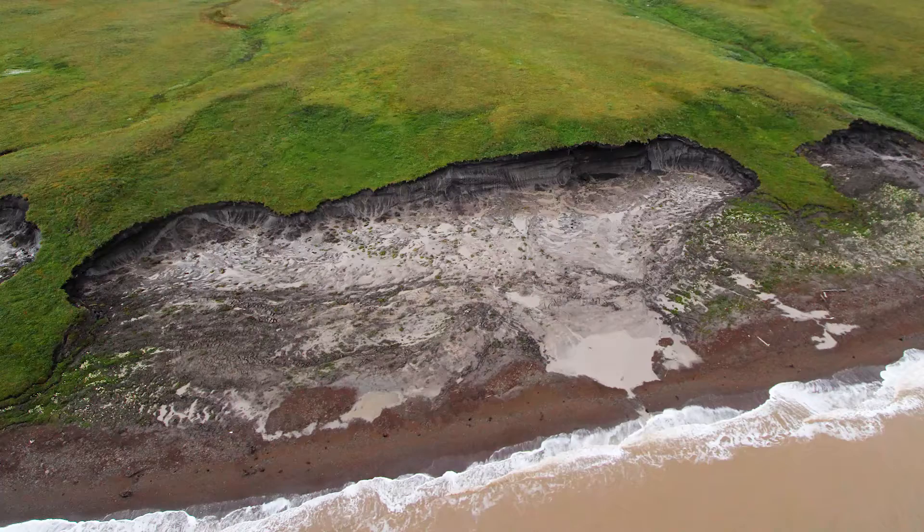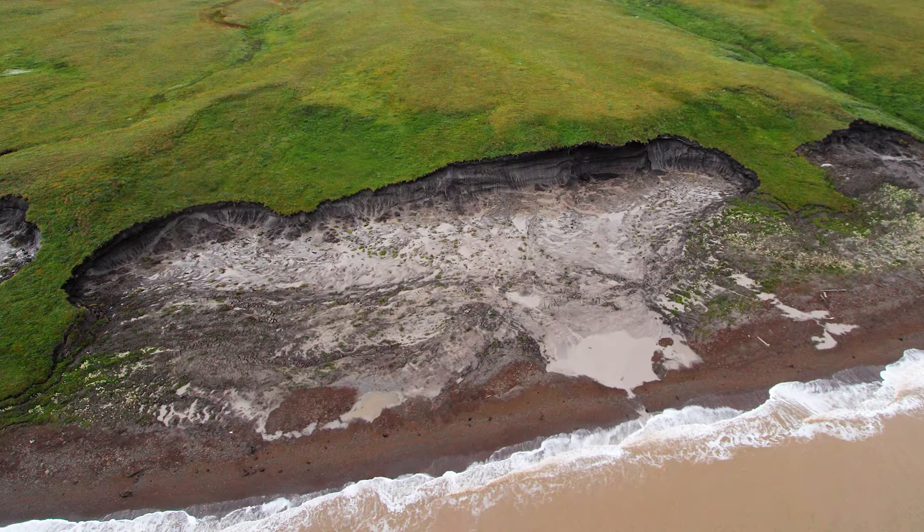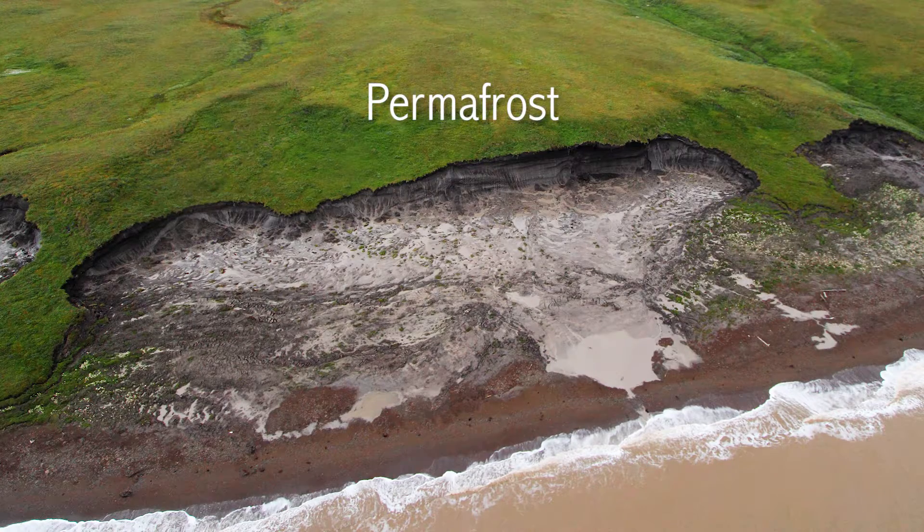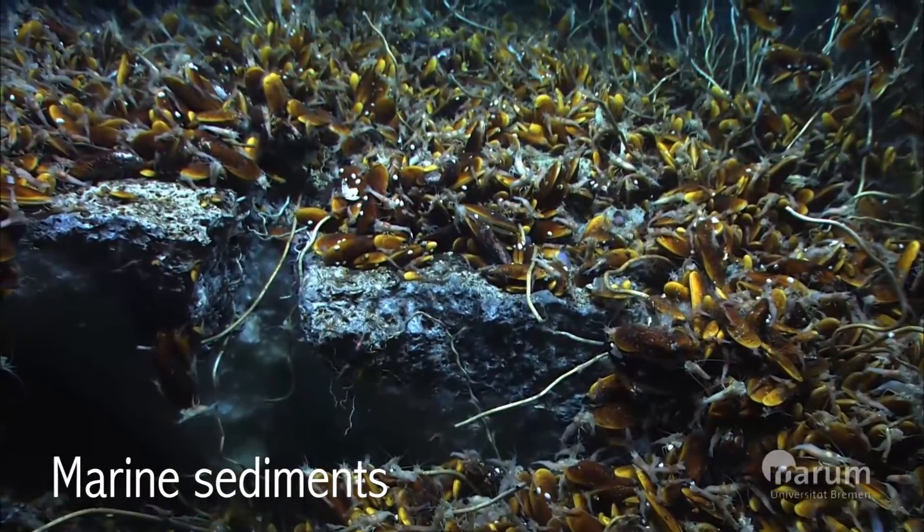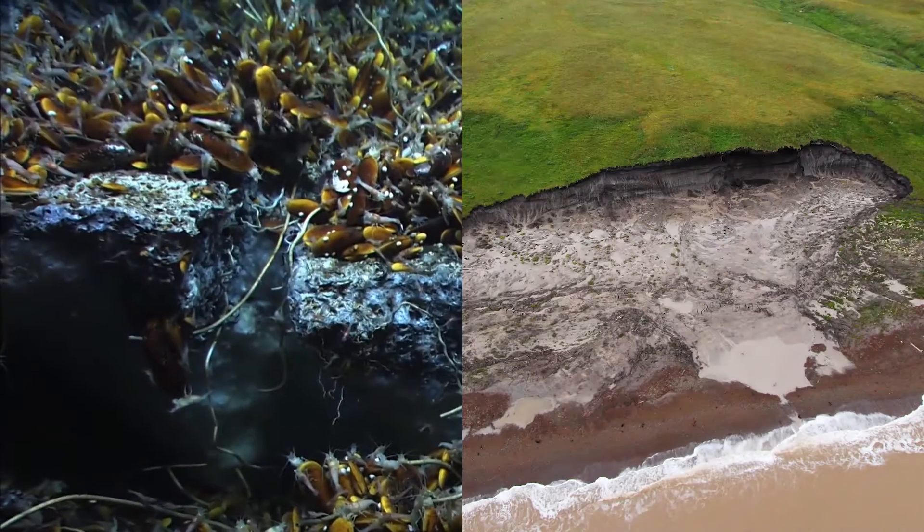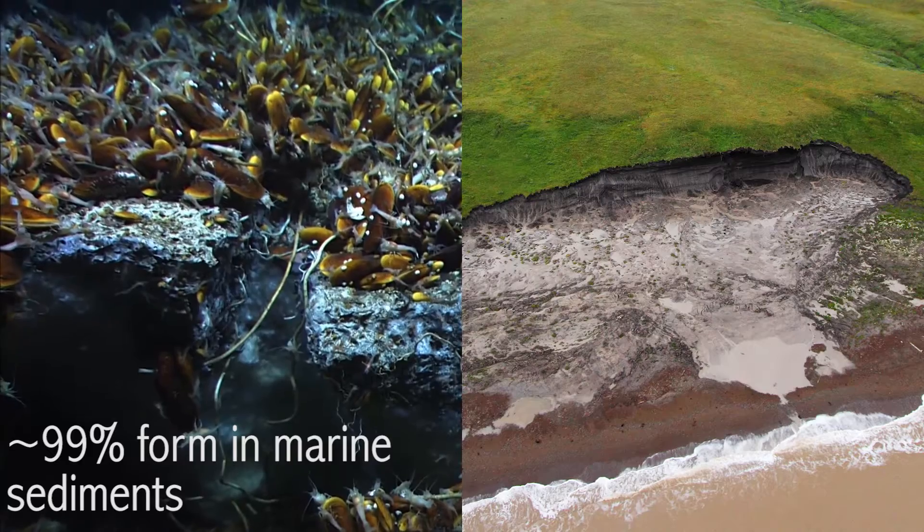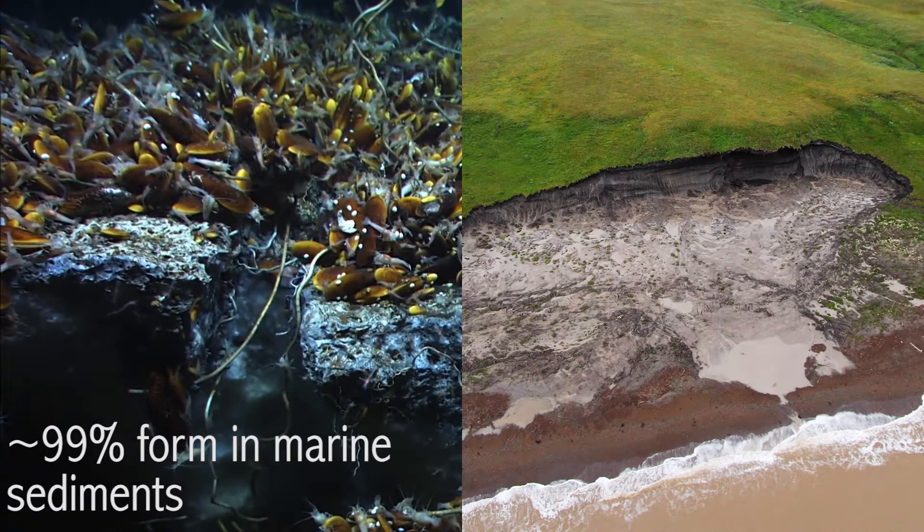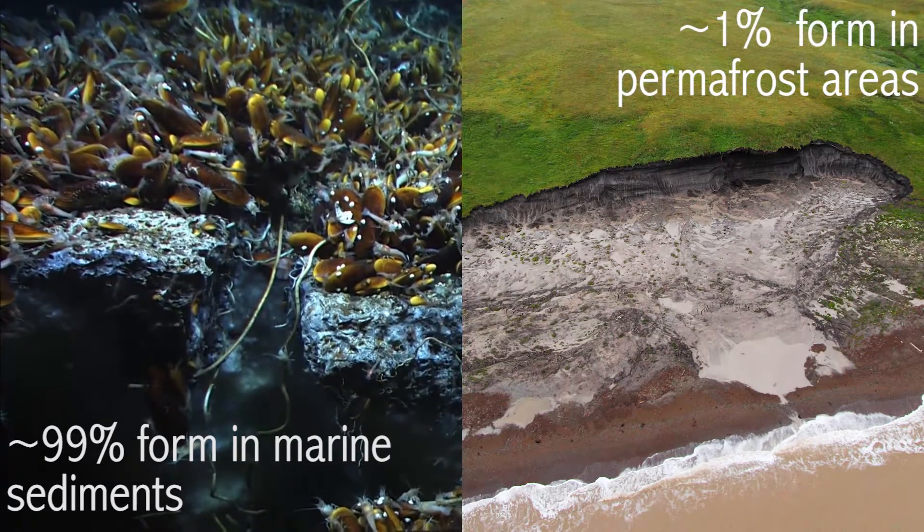Methane hydrates can exist on land in regions that are permanently frozen called permafrost and below the seafloor in marine sediments. About 99% of gas hydrates form in marine sediments and the other 1% form in the permafrost areas.